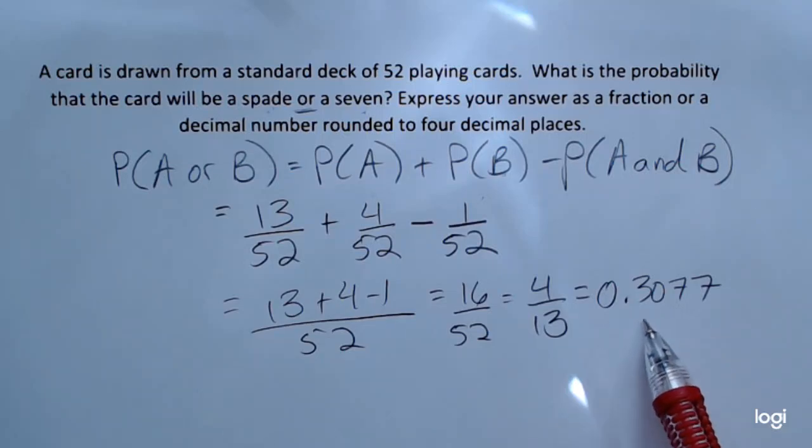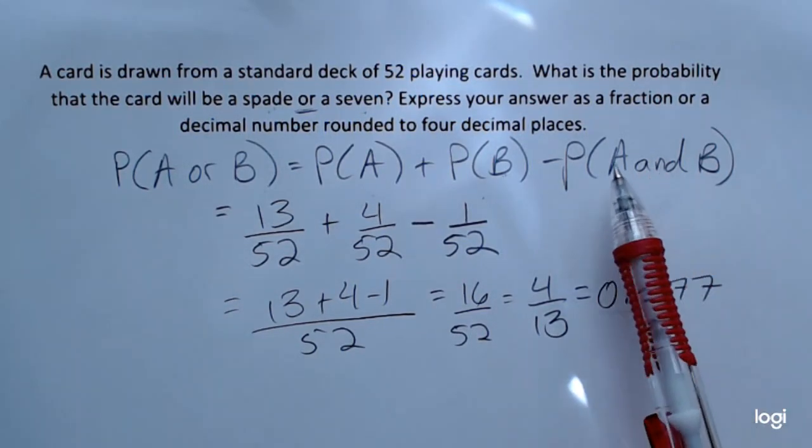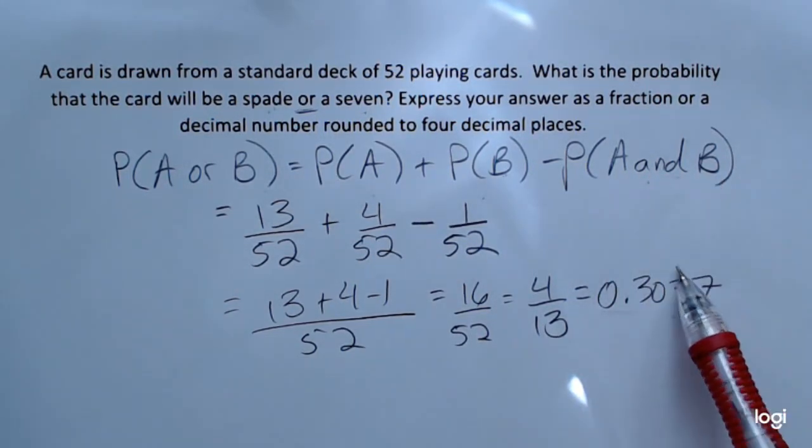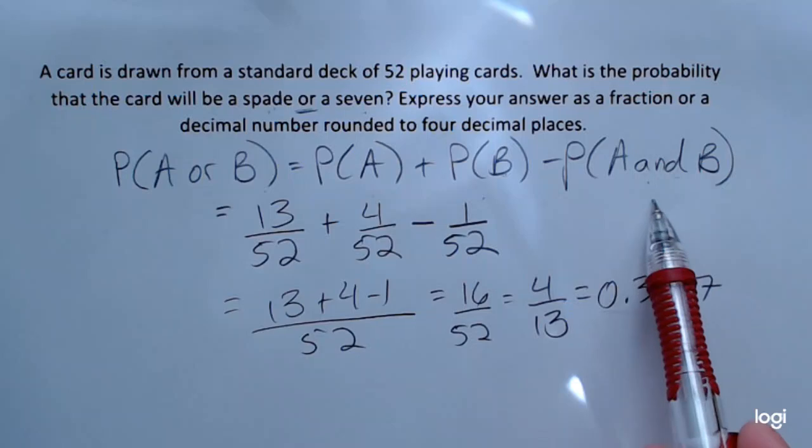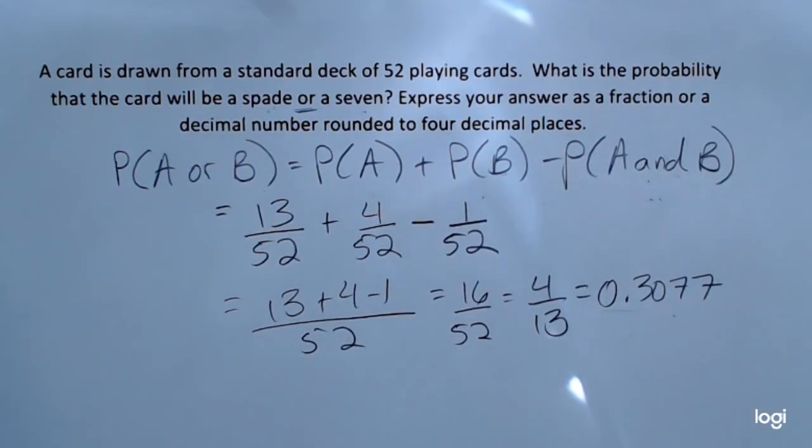Double-checking my answer, this is a valid probability. Remember, all probabilities need to fall between 0 and 1 inclusive. Sometimes you run across an OR problem for probability where if you don't subtract out the intersection, you get a probability greater than 1, and that should be a clue that there's something wrong. You may need to go back and determine whether or not you forgot to subtract out that intersection.